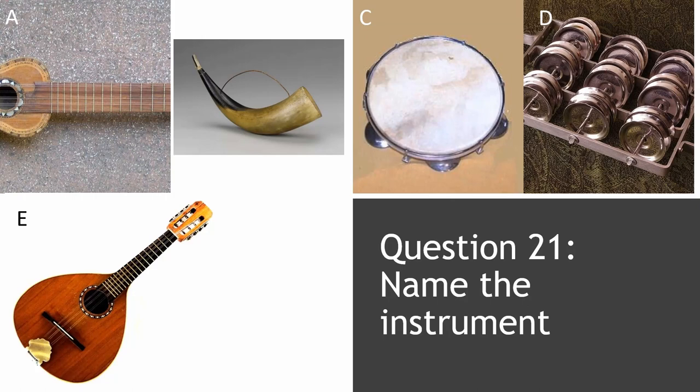Question 21: name these instruments. We have A, B — the letter B has disappeared from the image — C, D, and E. The answers are: A is Charango, B is Quencho, C is Pandeiro, D is Chocalho, and E is Bandolín.